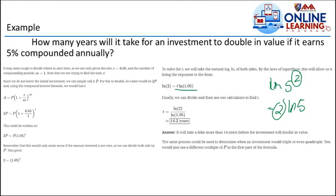It may seem tough to decide where to start. We are only given the rate R which equals 0.05 and the number of compounding periods M equals 1. Note that we are trying to find the time denoted as D. Since we do not know the initial investment, we can simply call it P as the principal. For this to double, its value would be 2P.